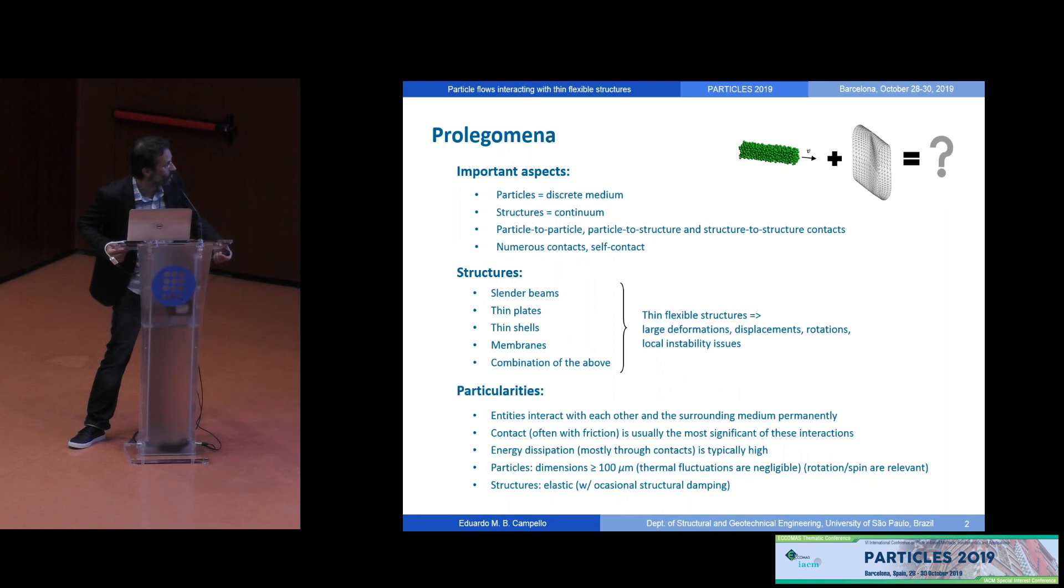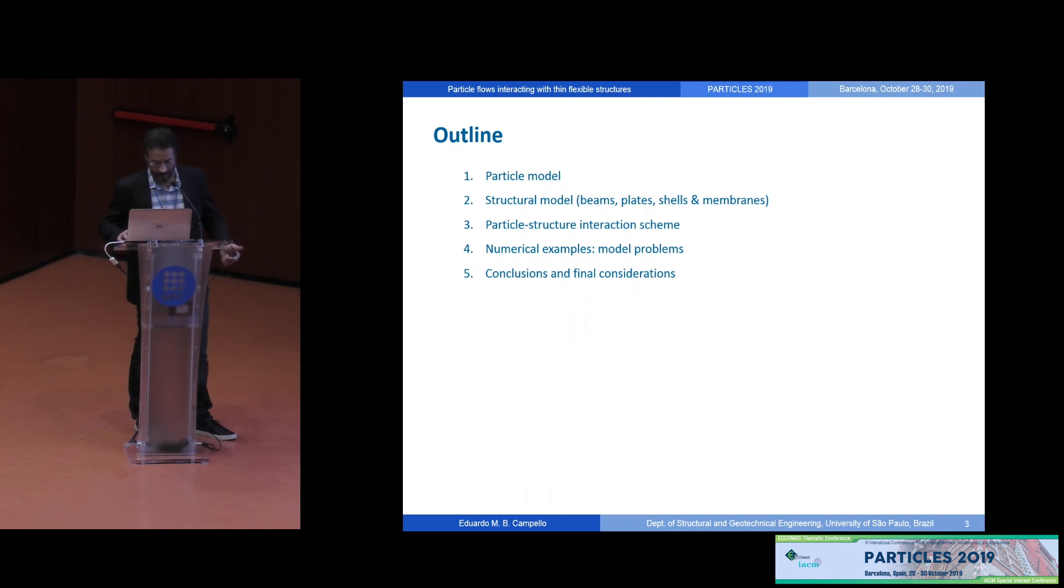Some particularities of these types of problems: these entities interact with each other and the surrounding medium permanently. Contact, often with friction, is typically the most significant of these interactions. There is energy dissipation. In our case, we will restrict ourselves to particles that have dimensions of at least 100 microns. This is to remove thermal fluctuations from the formulation. But on the other hand, that brings particles' rotations and spins to be relevant. And by structures here, we will restrict also to those that are elastic with some occasional structural damping.